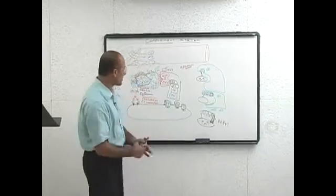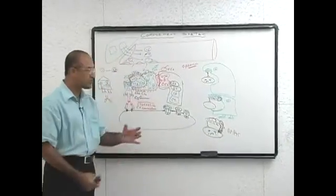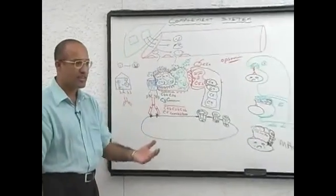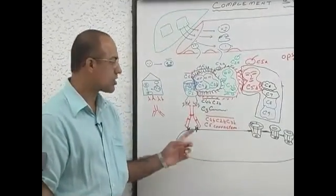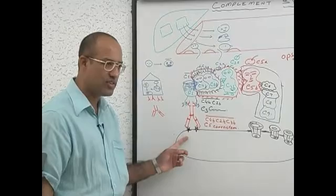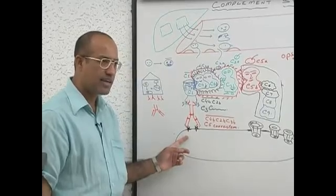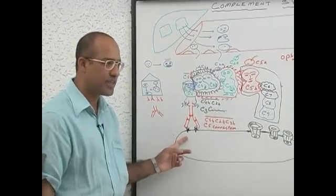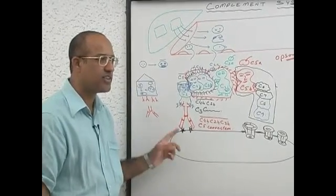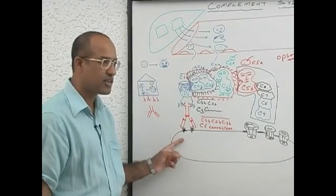Let's recap what we were discussing. We have just discussed that there is a bacteria which was expressing antigens and the immune system has made specific antibodies against these antigens.